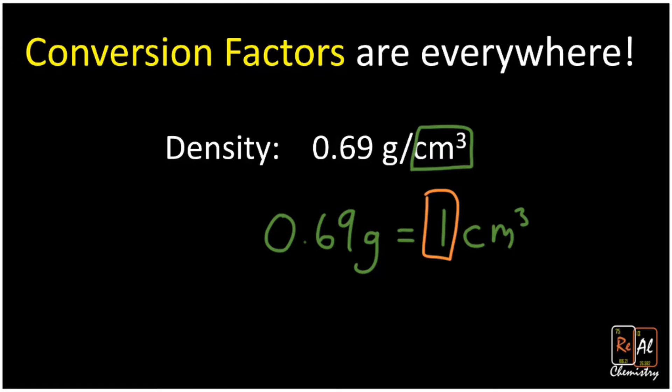Now I could use that and write a conversion factor like this, and say I'm going from five grams and I want to go to cubic centimeters. Well, now I put 0.69 grams on the bottom and one cubic centimeter up top. So what we're going to do in the rest of the video is I'm going to look at a few more other numbers that are also secretly conversion factors, and then we're going to use those to solve a bunch of problems.